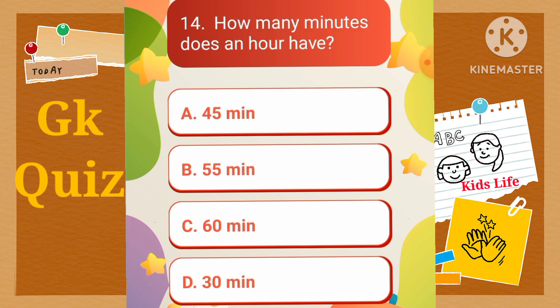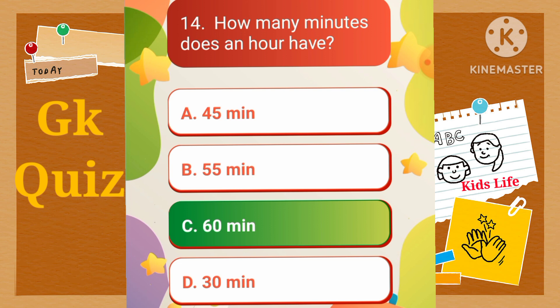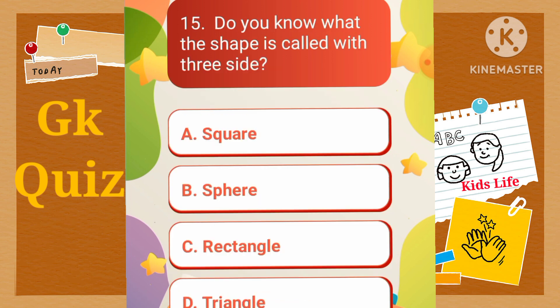How many minutes does an hour have? A) 45 minutes, B) 55 minutes, C) 60 minutes, D) 30 minutes. What is the shape called with three sides? A) Square, B) Sphere, C) Rectangle, D) Triangle.